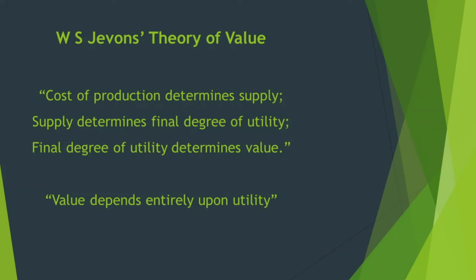Professor Jevons has given a pure theory of value. According to him, cost of production determines supply, supply determines the final degree of utility, and the final degree of utility determines value. Therefore, he opined that value depends entirely on utility.